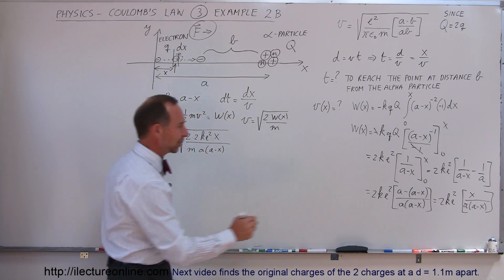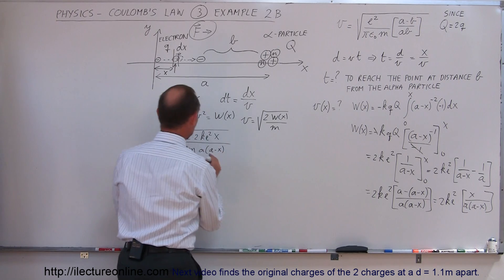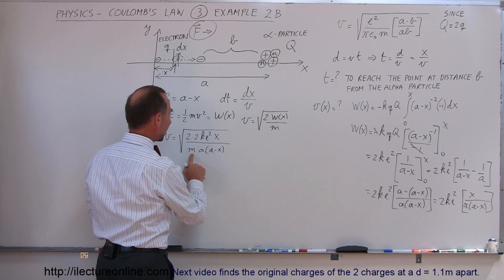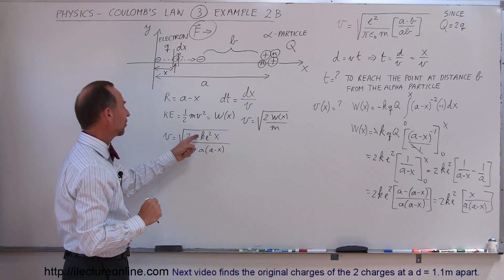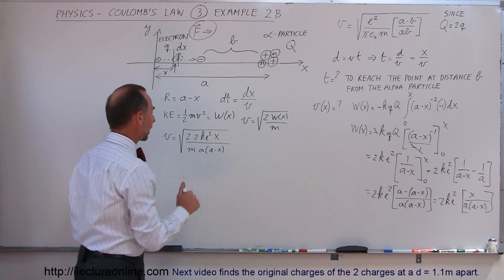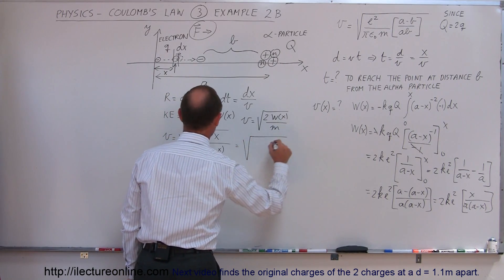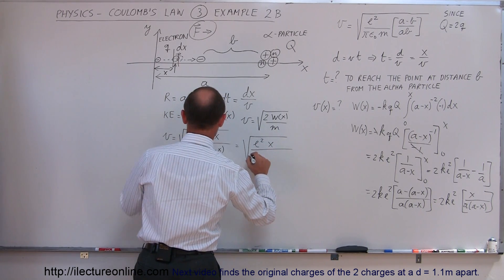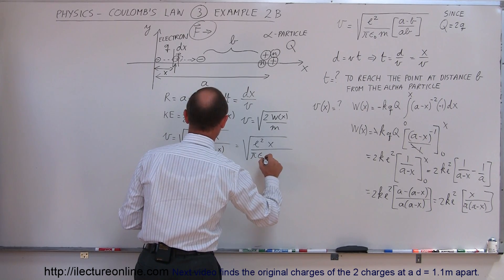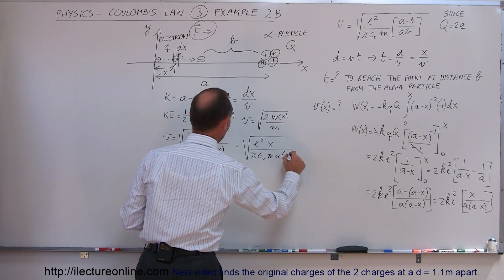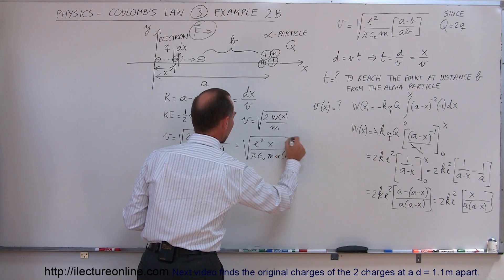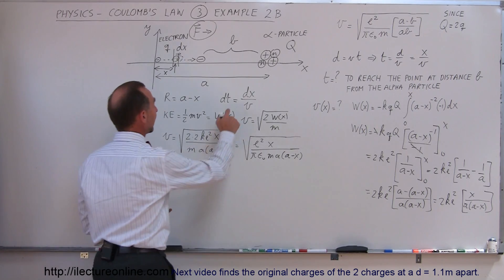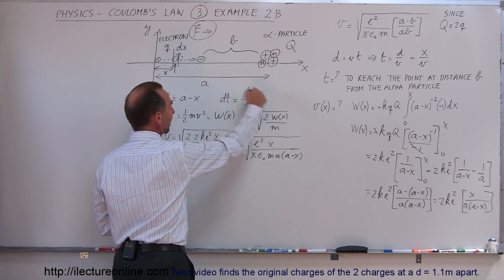Let's verify we have x over a times (a minus x), which is right here — 2 times 2, ke², divided by the mass. Since k equals 1 over 4π ε₀, the 2's will cancel, and we can write this as the square root of e² times x, divided by π ε₀ times m times a times (a minus x). So now we have an equation for the velocity, and we'll need that to find the time.